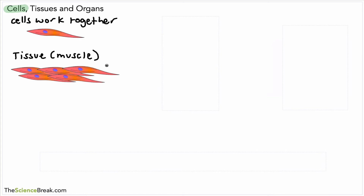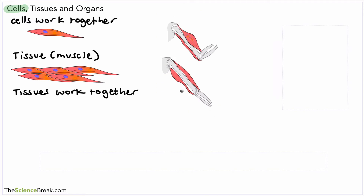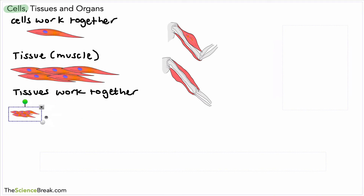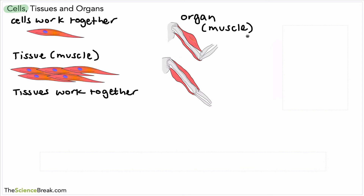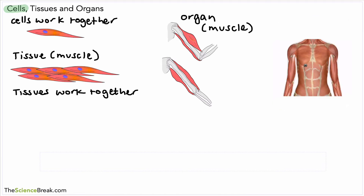So this example would be muscle tissue — cells of a similar type that work together, and when they work together we call that a tissue. Now very often many tissues work together as well to perform a particular function. For our example, muscle tissue working together would make muscle. Here's our muscle tissue made of muscle cells — those cells are very tiny compared to the whole muscle — and we now have something called an organ. This organ in our example is the muscle.